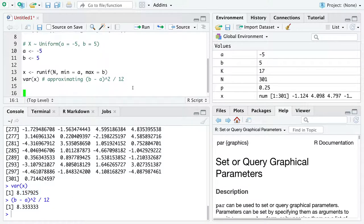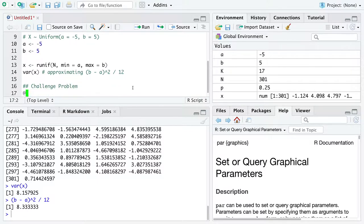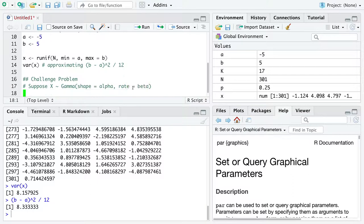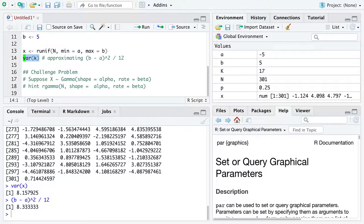So I'll leave you with a challenge problem. Suppose x follows the gamma distribution with shape equal to alpha and rate equal to beta. You choose alpha and beta. My hint to you is you can generate gamma observations with this syntax. You should generate the observations, calculate the variance on them, and then figure out, just by googling, what distribution side expectation, known as the variance, is being approximated by code like this in R.